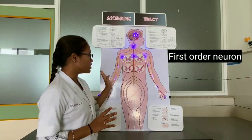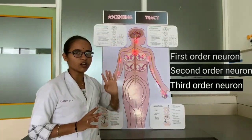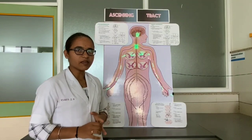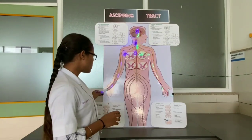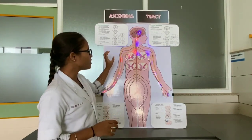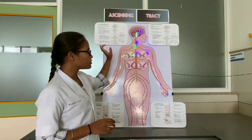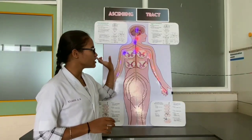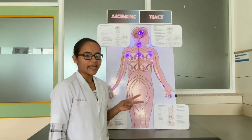These are first order neurons, second order neurons, and third order neurons. First order neurons carry impulses of various sensations from the receptors through the sensory neurons towards the posterior nerve root ganglion. These are the first order neurons.